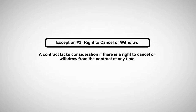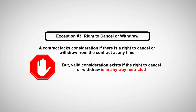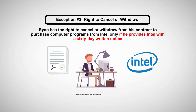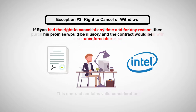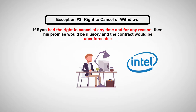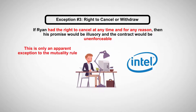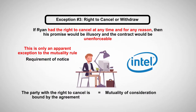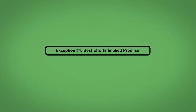Exception number three: right to cancel or withdraw. A contract lacks consideration if there is a right to cancel or withdraw from the contract at any time, but valid consideration exists if the right to cancel or withdraw is in any way restricted. For example, Ryan has the right to cancel or withdraw from his contract to purchase computer programs from Intel only if he provides Intel with a 60-day written notice. This contract contains valid consideration. If Ryan had the right to cancel at any time and for any reason, his promise would be illusory and the contract unenforceable. This is only an apparent exception — because there is a requirement of notice, the party with the right to cancel is bound, and therefore there is mutuality of consideration.